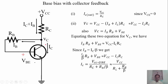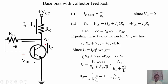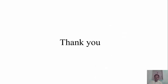Since VBE is very small, we can neglect it, so IC can be written approximately as VCC divided by (RC plus RB divided by beta). The factor k-beta equals 1 divided by (1 plus RB/RC times 1/beta), which also equals 1 minus IC divided by IC-saturation. So this is the collector feedback bias, and with it we can stabilize the Q-point. Thank you for watching this video.